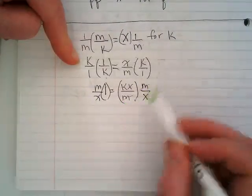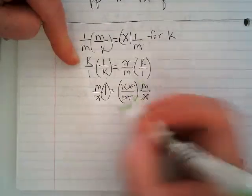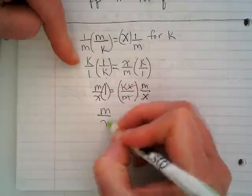This is going to cancel and this is going to cancel and I'm going to have m over x equals k.